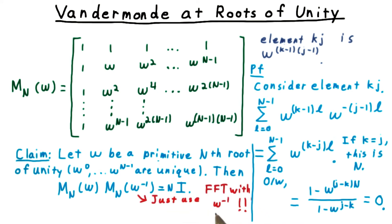This is terribly important. Recall that evaluating a polynomial at the roots of unity corresponded to multiplying the coefficients by this matrix here, M sub n of omega.